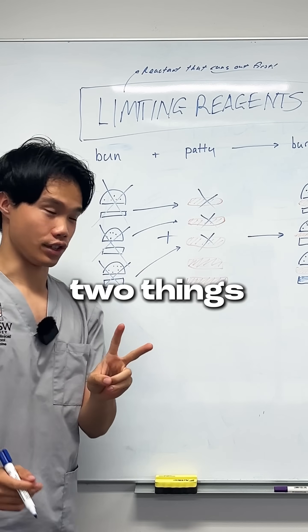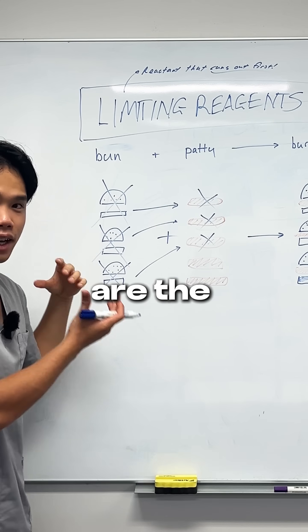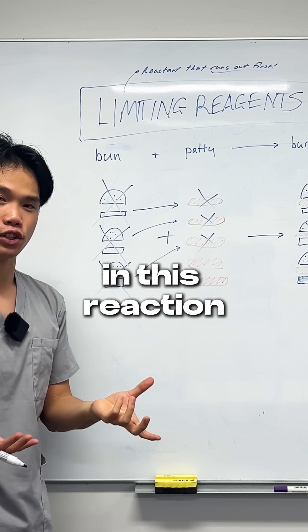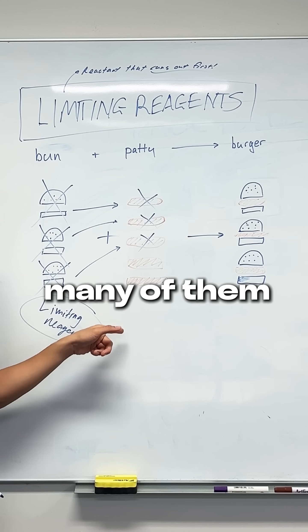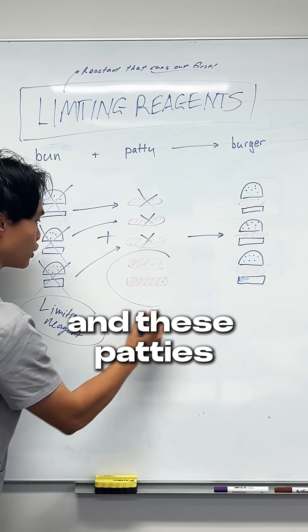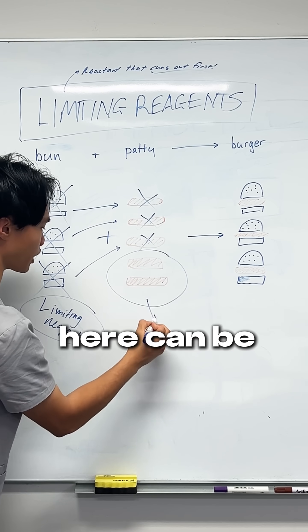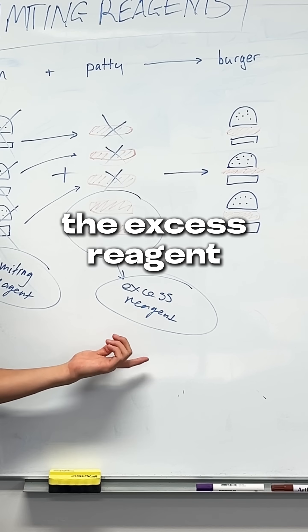Now that means two things. The buns, seeing as they ran out first, are the limiting reagent in this reaction. And number two, the patties — because there are too many of them, there's an excess. These patties here can be referred to as the excess reagent.